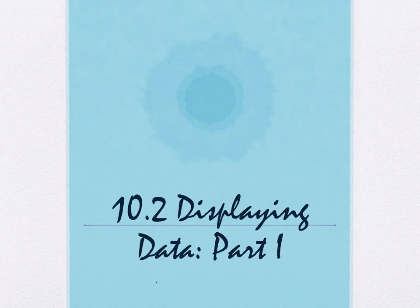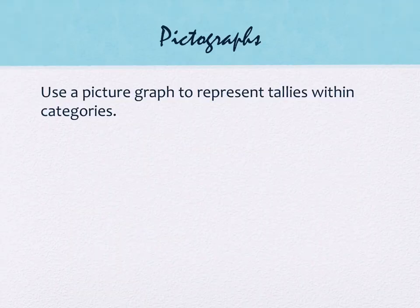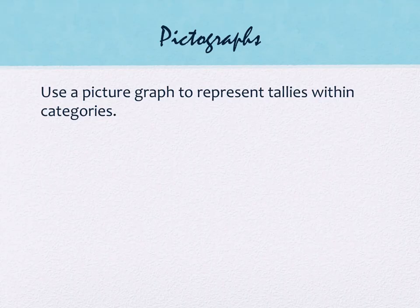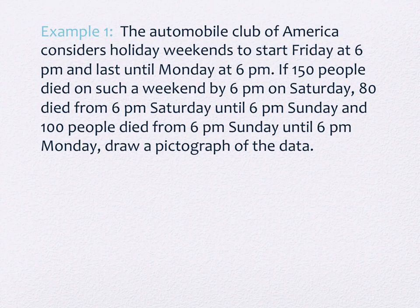The first couple of graphs are things you'd do at younger ages. The first one is pictographs. A pictograph is a picture graph used to represent tallies within categories — they use some kind of picture. Little ones do things like counting jelly beans or drawing shapes to represent a number in a category. We're going to do an example from your book.